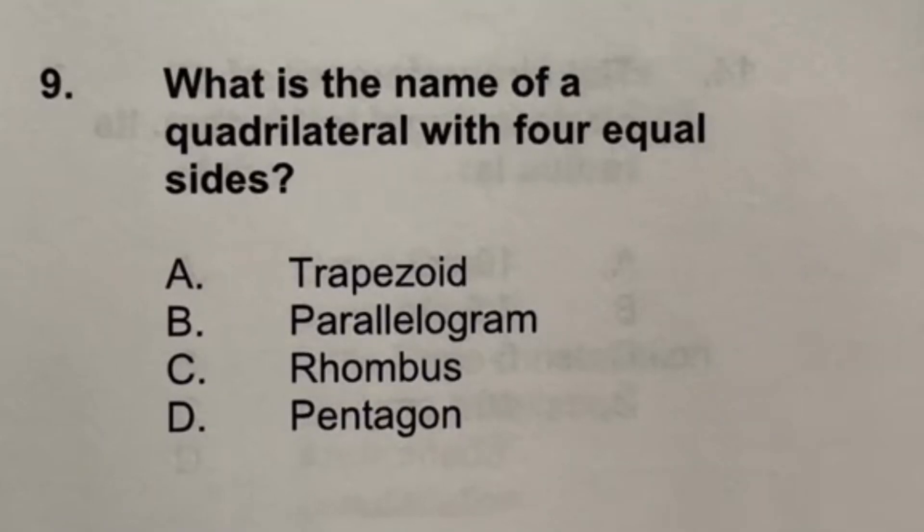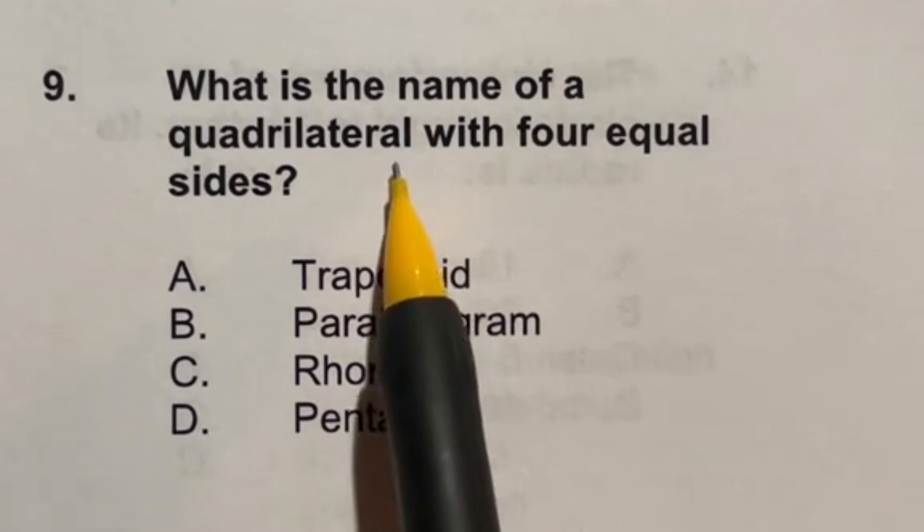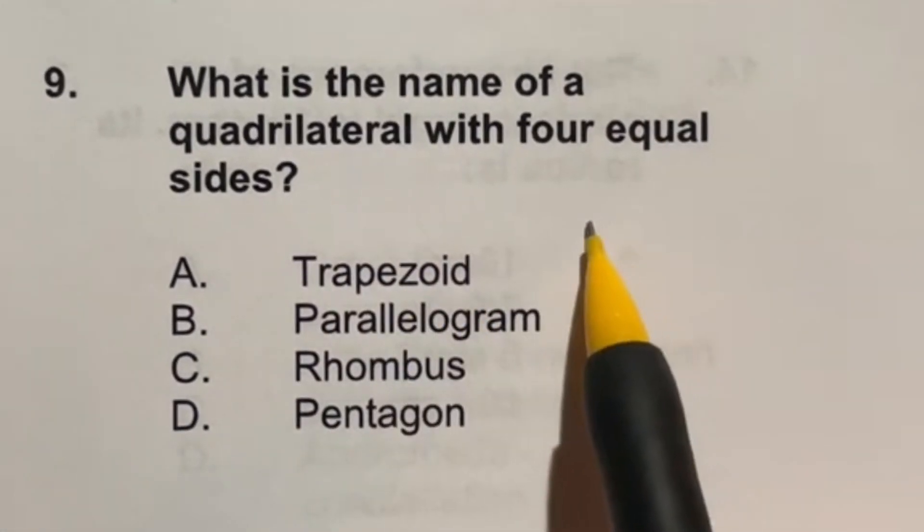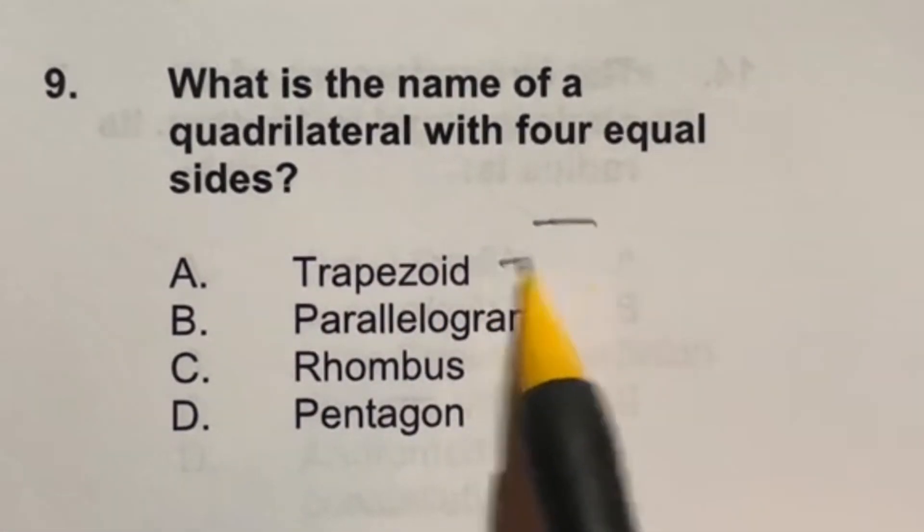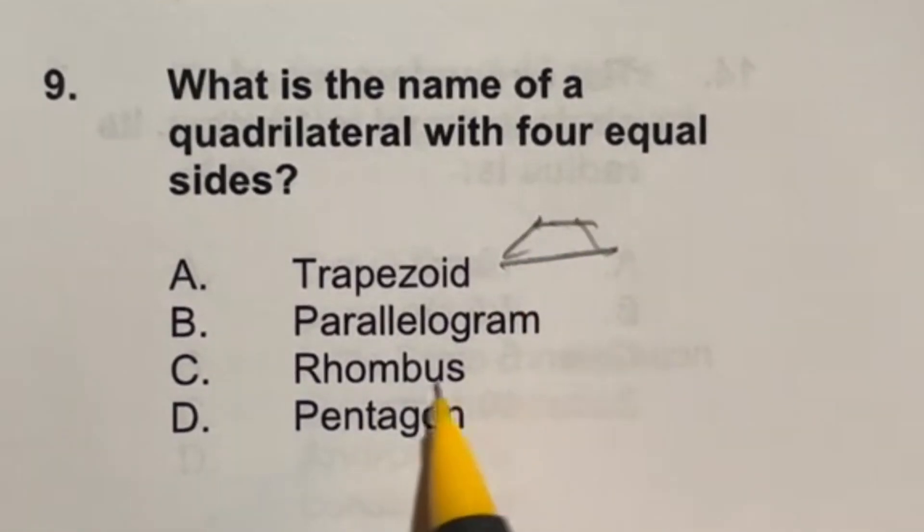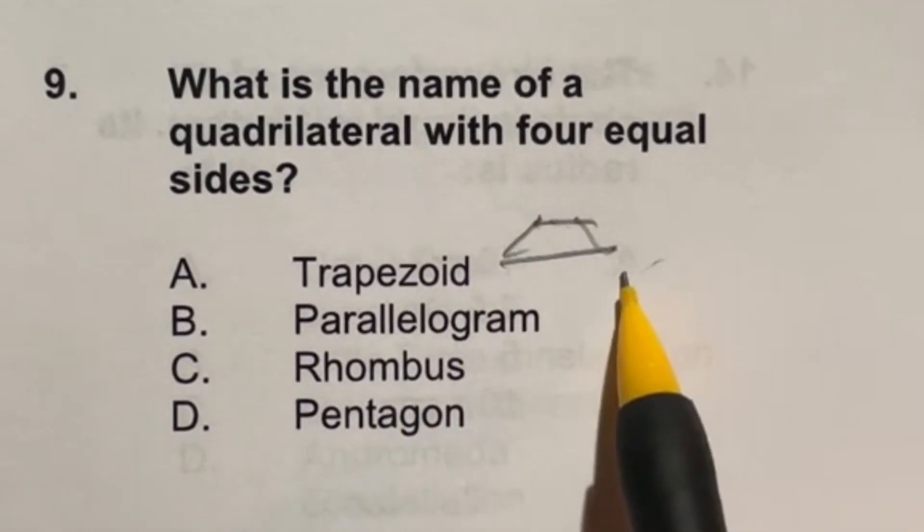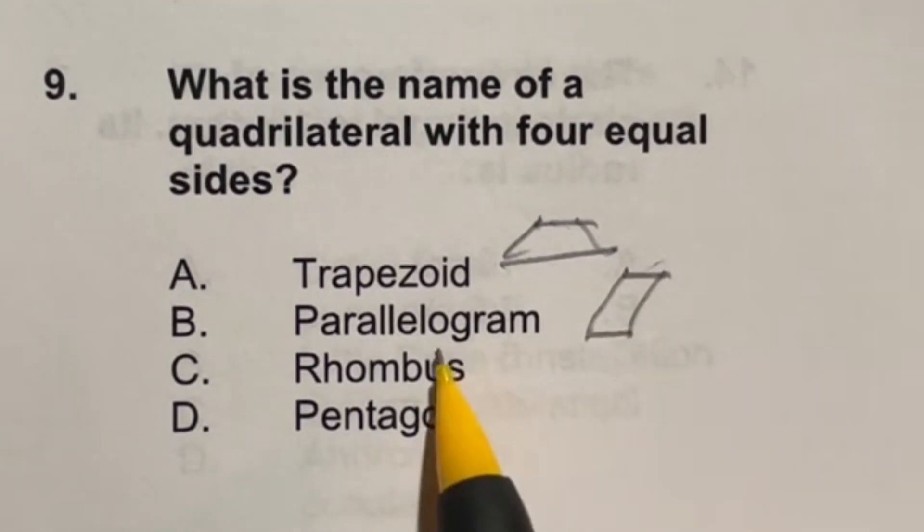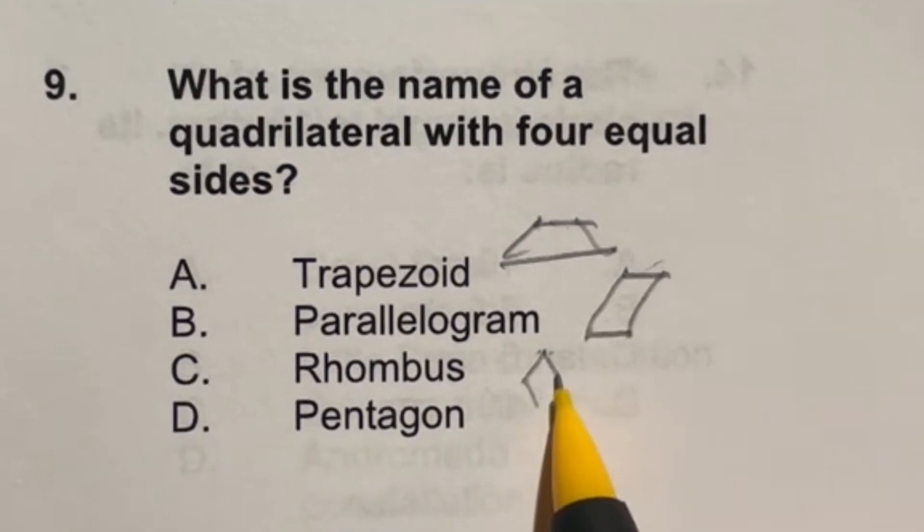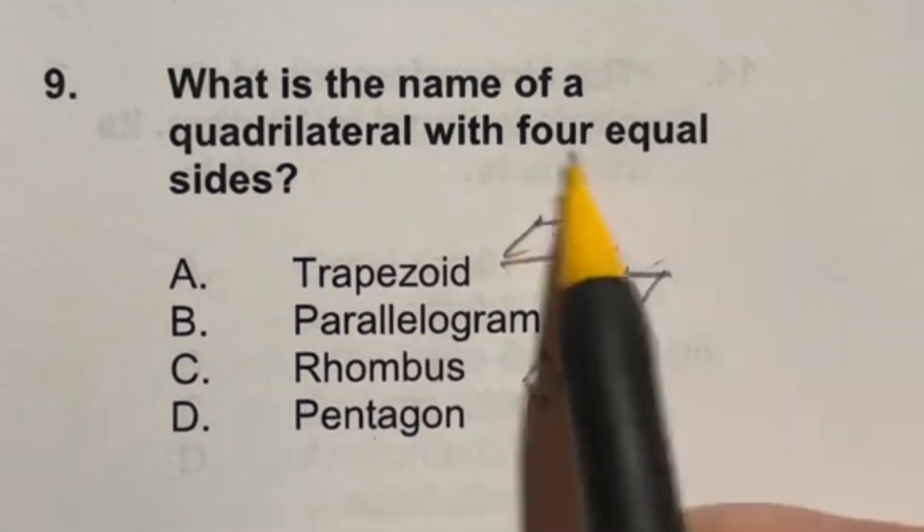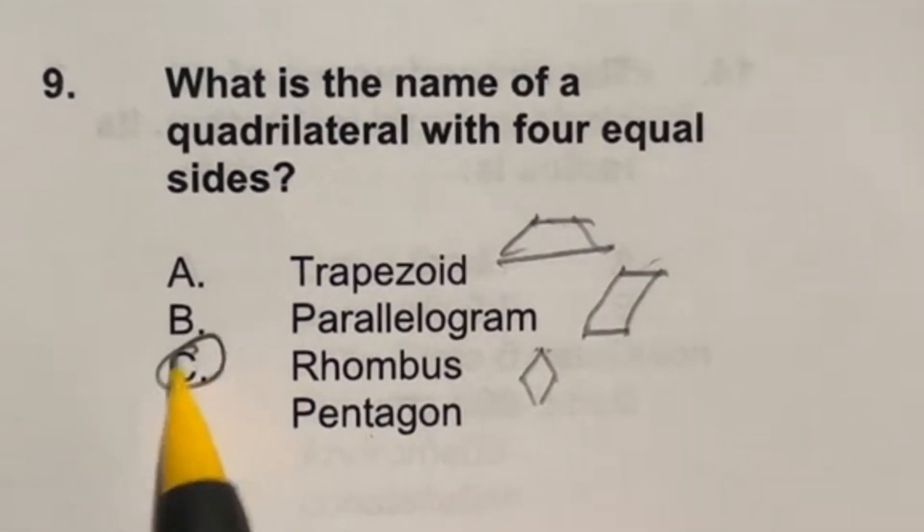So number 9 is just straight up definitions. Quadrilateral with four equal sides. Well, first off, a trapezoid is when you have two sides that are parallel, but the other two are not. A parallelogram means that all of the sides are parallel to the ones across from them. A rhombus is one that has four sides and they are all the same length. And a pentagon is a five-sided figure. So out of our definition up here, our answer is going to be C.